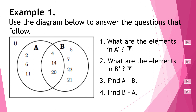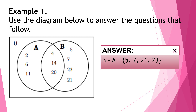For the fourth question, find B minus A — the elements of B that are not in A. The answer is: B minus A is equal to 5, 7, 21, and 23. Note that 4, 14, and 20 are not included in B minus A, because even though they are elements of B, they are also elements of A. So we do not write 4, 14, and 20 in B minus A, since they are shared elements of both A and B.